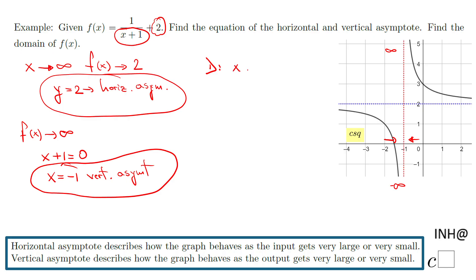If you take a look here it's any number but negative one. So if you want to write the interval notation: negative infinity to negative one, union with negative one to infinity. This is the domain.